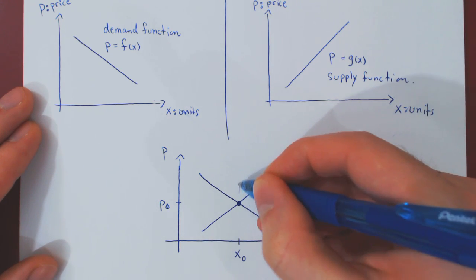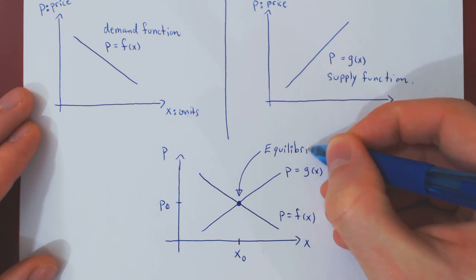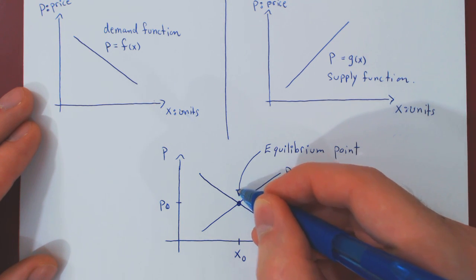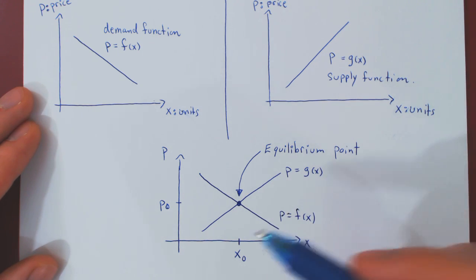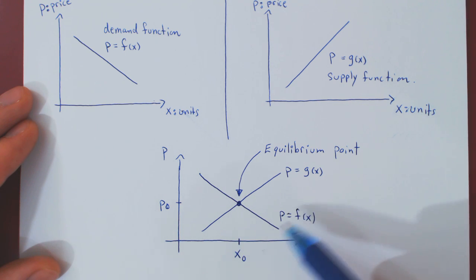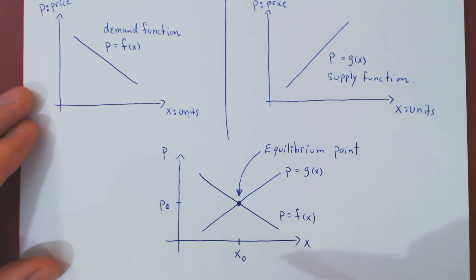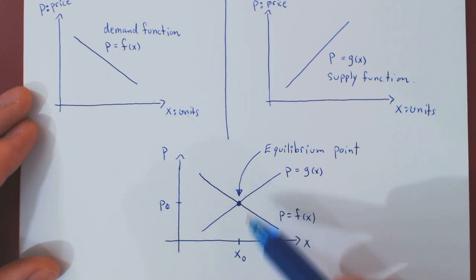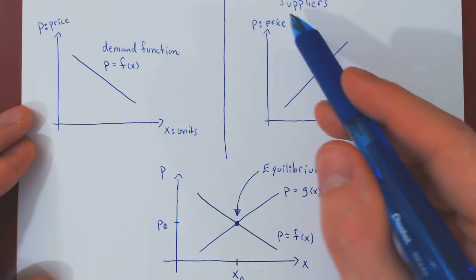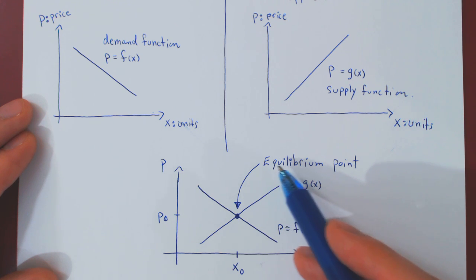Why is this called an equilibrium point? It's a very intuitive name because this is the point where a market has reached an equilibrium. For the given price P0, the number of units that consumers are willing to purchase and the number of units that suppliers are willing to sell to consumers is exactly the same. Every single unit that is being put on the market by suppliers will be purchased by consumers, so there will be absolutely no leftover. And that is the idea of a market equilibrium point.